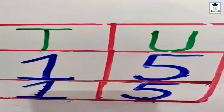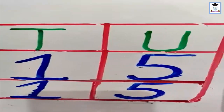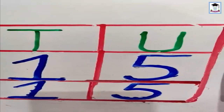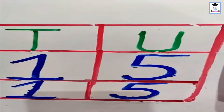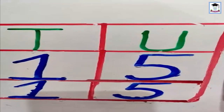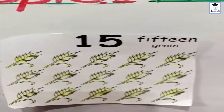Number 15: 1, 5 — 15. All of you say: 1, 5, 15. 1, 5, 15. How many grains? 15. Okay.